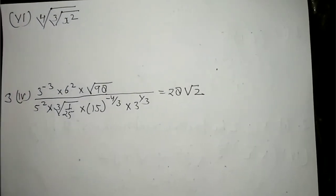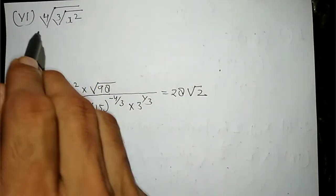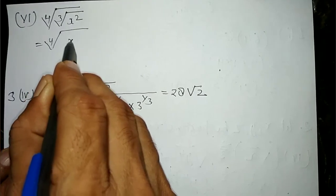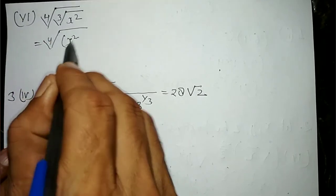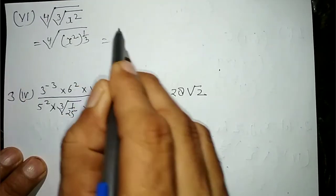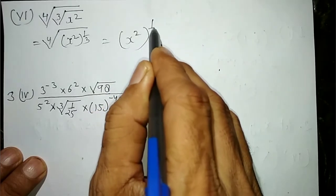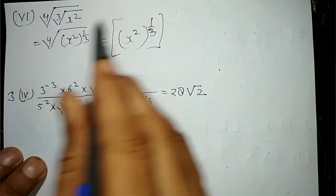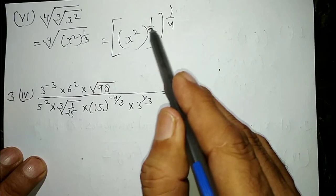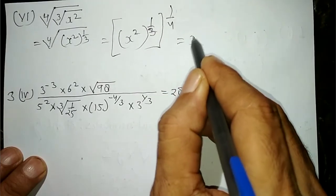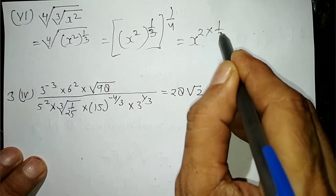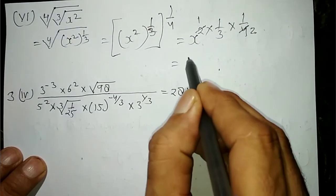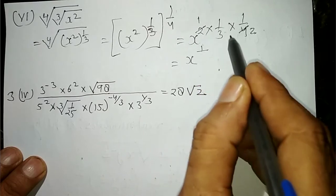Next, part six देखेंगे: x square का fourth root of cube root — cube root को power में one upon three लिखेंगे: (x square) to the power one upon three, whole power one upon four. Power के ऊपर power का multiply होता है: x to the power (2 × one upon three × one upon four) = x to the power one upon six. यह answer हो जाएगा।